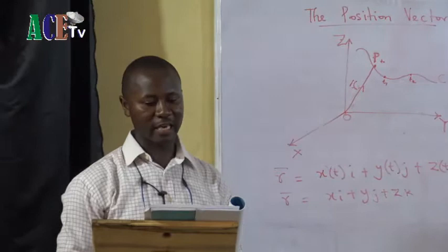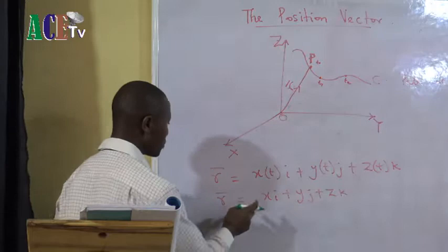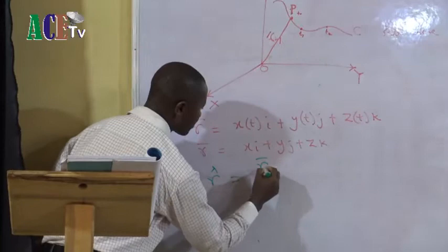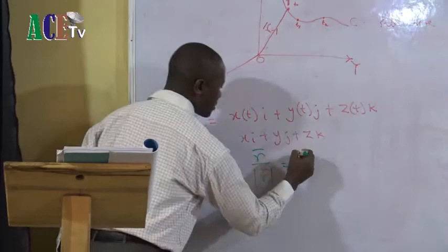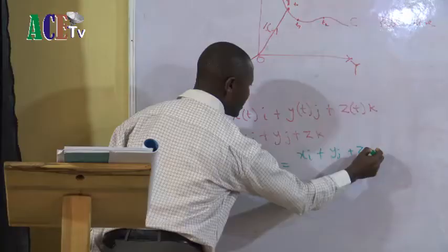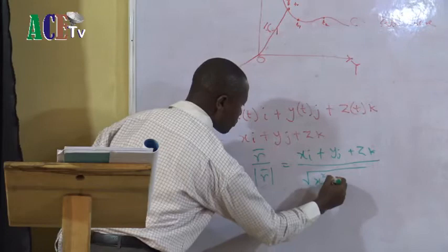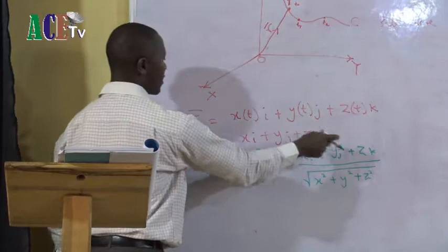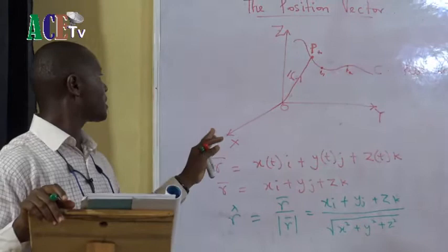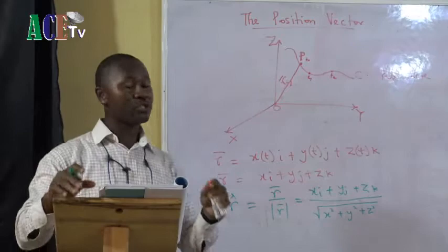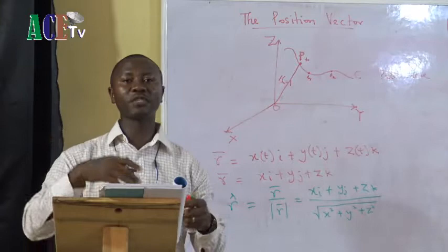We can also define the unit vector in the direction of this position vector. The unit vector is defined as R — the position vector — divided by the magnitude of the position vector. Noting that our R is Xi plus Yj plus Zk, the magnitude of R is given as the square root of X squared plus Y squared plus Z squared. This is the unit vector in the direction of the position vector R. From this, we can begin to describe the motion of particle P with respect to velocity, acceleration, and we can even define kinetic energy and many other physical quantities.